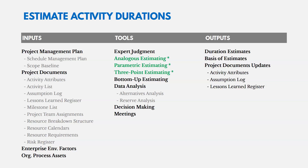Under data analysis, there's also alternatives analysis — coming up with different options for doing things — and reserve analysis, adding extra time to individual activities in case things go wrong. The key outputs are duration estimates and basis of estimates. Duration estimates are straightforward — how long things will take. The basis of estimates documents how you arrived at those estimates — for instance, if you said something takes two weeks, what was the basis for that number?